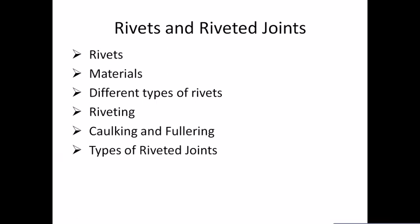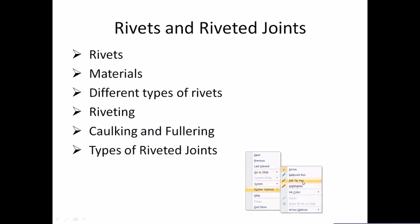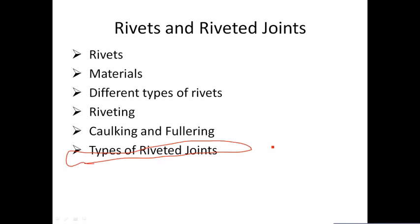Hello friends, have a good day. We'll start Part B, that is drawing of riveted joints. In this session we'll look at what rivets are, what materials are used to manufacture them, different types of rivets, the meaning of riveting, caulking and fullering, as well as the types of riveted joints. Types of riveted joints is what you need to carry out in lab work.